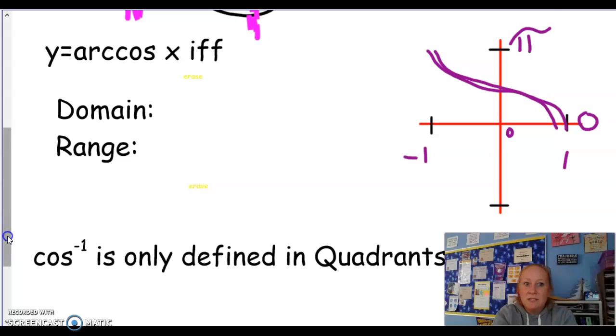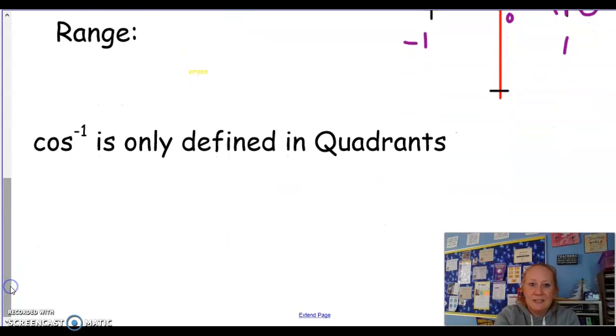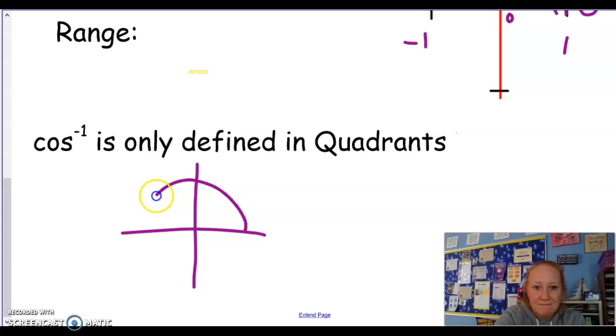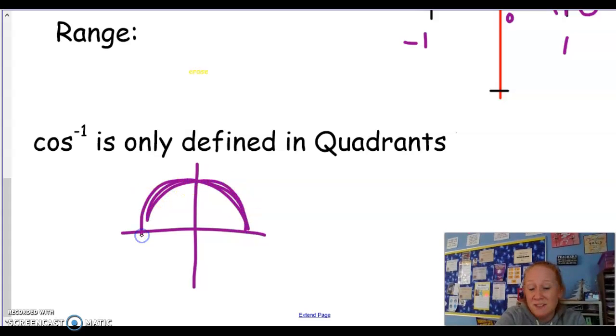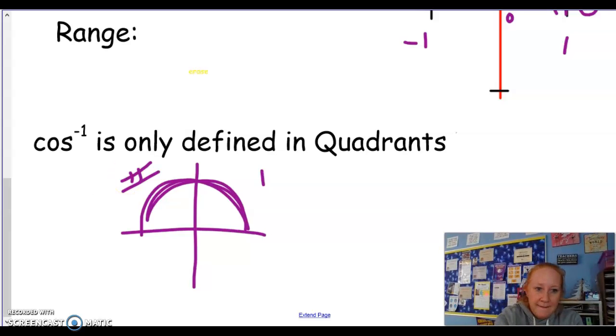Then this is only defined in quadrants, it's really this part of the circle, so quadrants 1 and 2. Think about that for a sec.